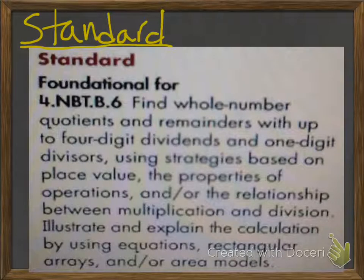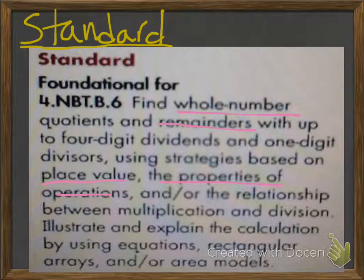Our standard is to find whole number quotients and remainders with up to four digit dividends and one digit divisors using strategies based on place value, the properties of operations, and or the relationship between multiplication and division.